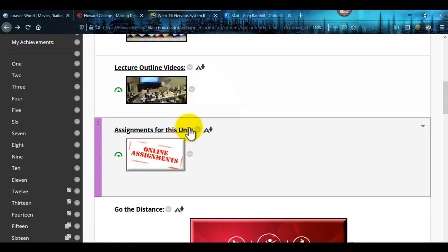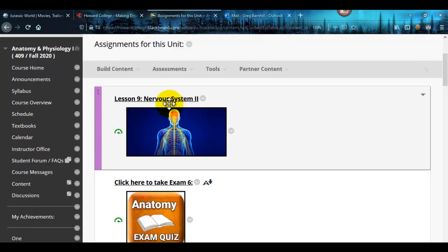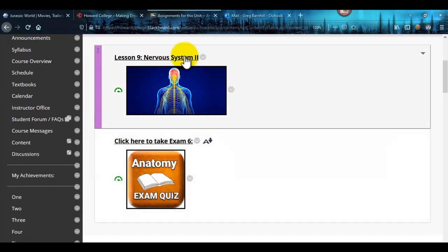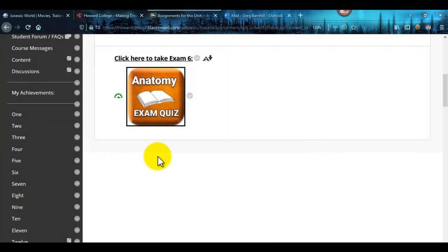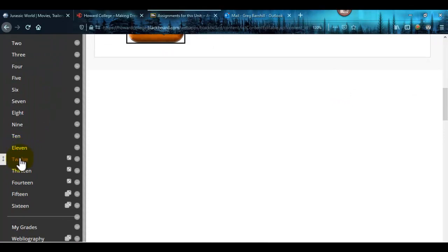The assignments for this unit: here is the last lesson for A&P 1 lecture online, and then here is the last lecture exam. You have early access. Once again, check the My Grades tab to see when these are due so you can get started early. We are ending our semester early—the semester is only 14 weeks long.